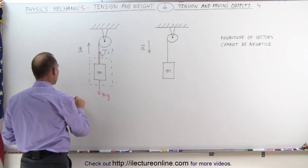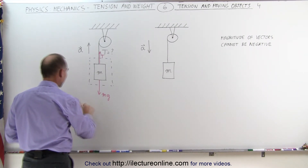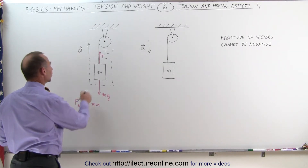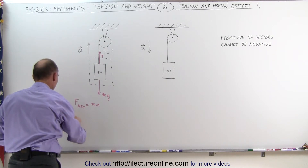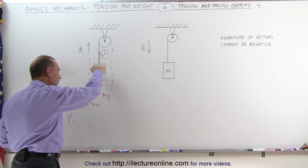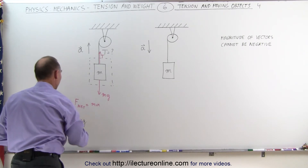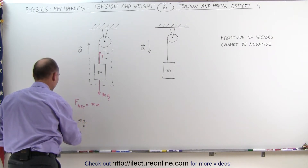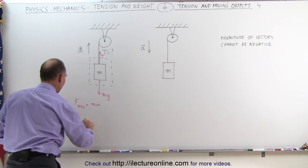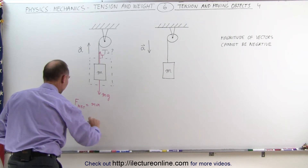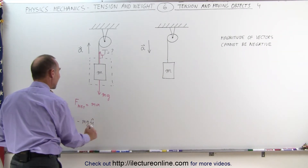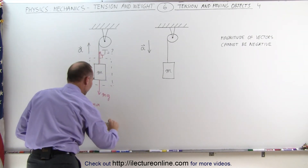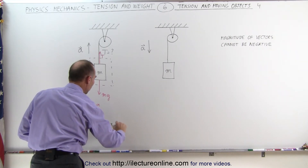We can say that the sum of the forces, or F-net, equals mass times acceleration. The net force is caused by the tension pulling up — that's a positive quantity — minus the weight of the object pulling downward, minus mg. Writing this with unit vectors: the tension in the y-direction minus the weight in the y-direction equals the mass times acceleration in the upward y-direction, which is a positive quantity.